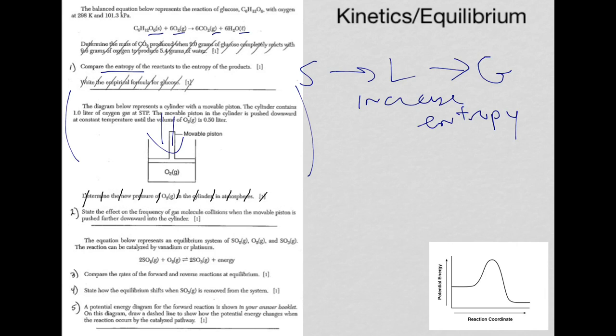So by pushing the piston down, what's happening? You are decreasing the volume and increasing the pressure. Temperature remains constant. So the effect of the frequency of the gas particle collisions is that they're increasing in frequency.